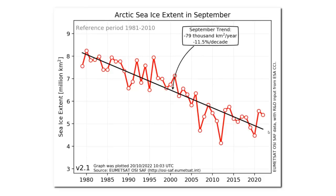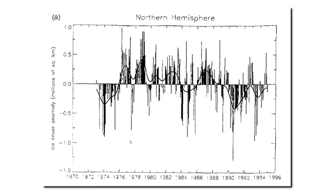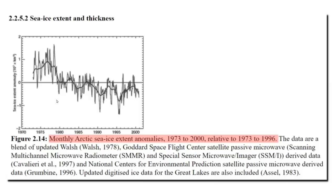What they're doing is hiding critical data. The 1995 United Nations report showed the same thing — the ice peaked in 1979 and was much lower around 1974. But in the 2001 report, the same United Nations report where they erased the medieval warm period, the IPCC also erased the low extent of the early 1970s.